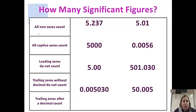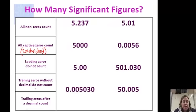Let's look at these examples. And here I have all the rules for you again. All non-zeros count. All captive, or we call these also sandwiched, zeros count. Leading zeros do not. Trailing zeros count only if there's a decimal. So, without a decimal, they do not. So, these are both for trailing zeros. All right. So, here let's assume that these are all measurements. And let's say they're all measured in grams.